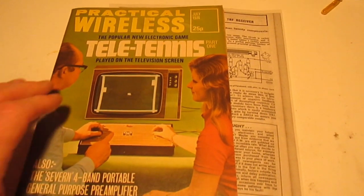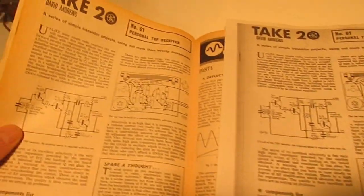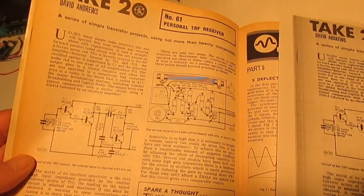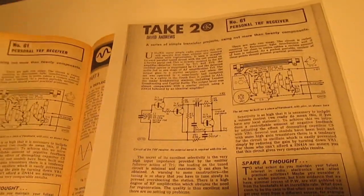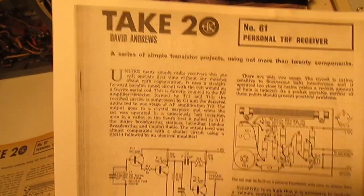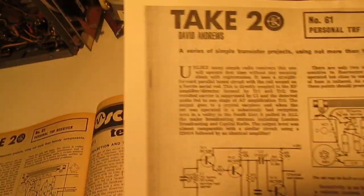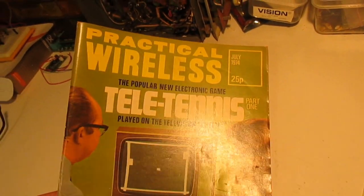So the first thing I've done here is, so we don't damage the original magazine or I don't get soldering flux or spill anything on it, I've actually photocopied the article, and then we're going to build it from this and I can make notes and things at the bottom. That's the first step, so we don't damage this magazine, just make a quick photocopy of it.